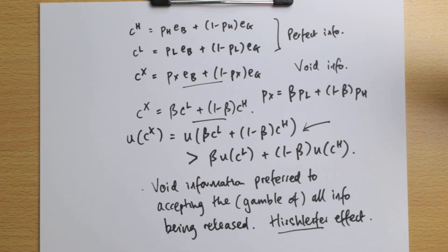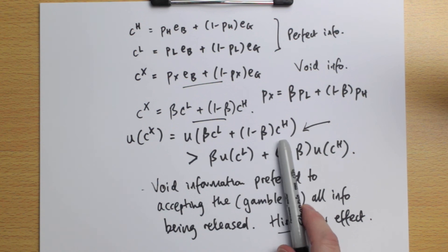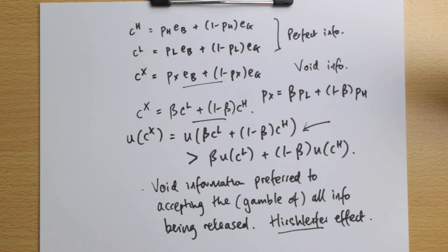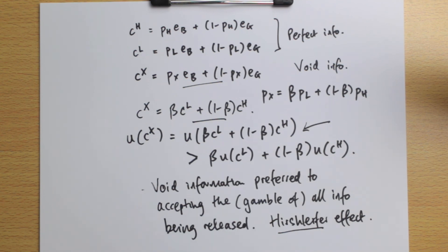It's not the information itself that's the problem — it's being known to know that information. If firms know consumers know their own type, they cannot offer insurance against being high-risk, since only high-risk types would accept it anyway. So void information has the highest welfare, perfect information has less, and asymmetric information is the very worst. Void information — no information at all — is the most preferred situation for this type of market. That is the Hirschleifer effect.